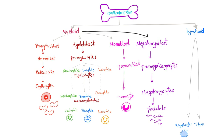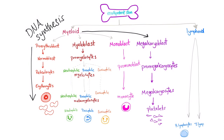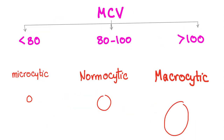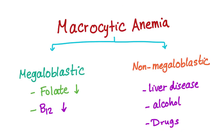These steps require DNA synthesis because this is the process of replication. So all of these steps require DNA synthesis. If I have a problem with DNA synthesis, there will be a problem forming normal, mature red blood cells as well as all of the other cells. The MCV — the mean corpuscular volume — determines whether we have microcytic, normocytic, or macrocytic anemia. Less than 80 femtoliters is microcytic, 80 to 100 is normocytic, and more than 100 is macrocytic, which is the topic of today's video.